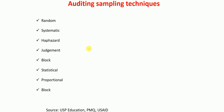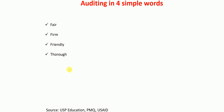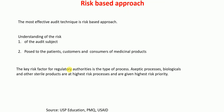An important concept is audit sampling techniques. The technique should be random, systematic, half-hazard, judgment, block, statistical, or proportional. These are the different sampling techniques that can be used in auditing.